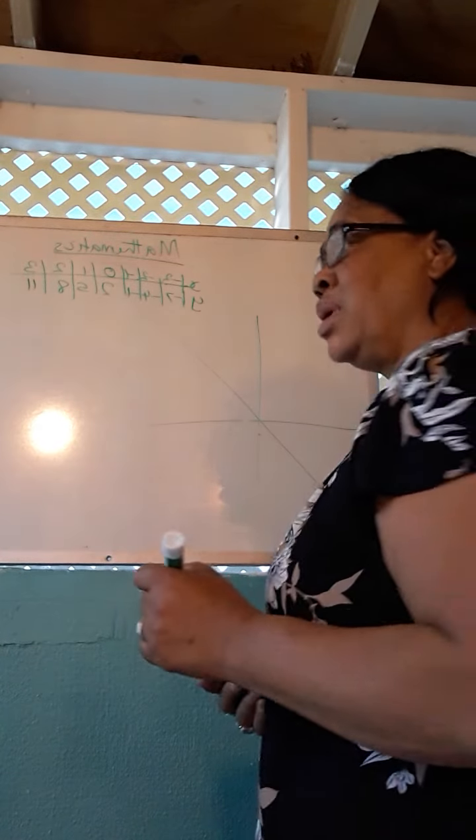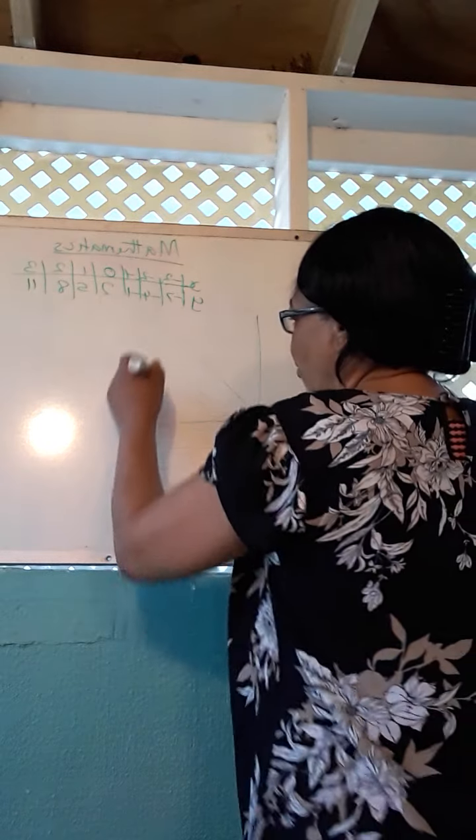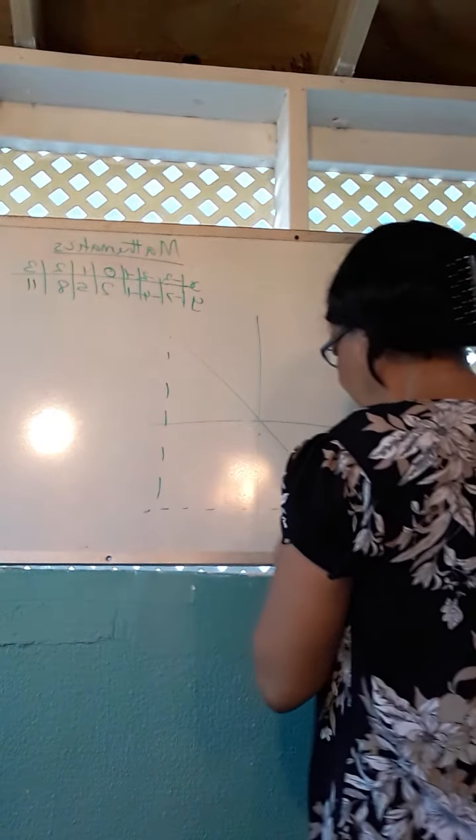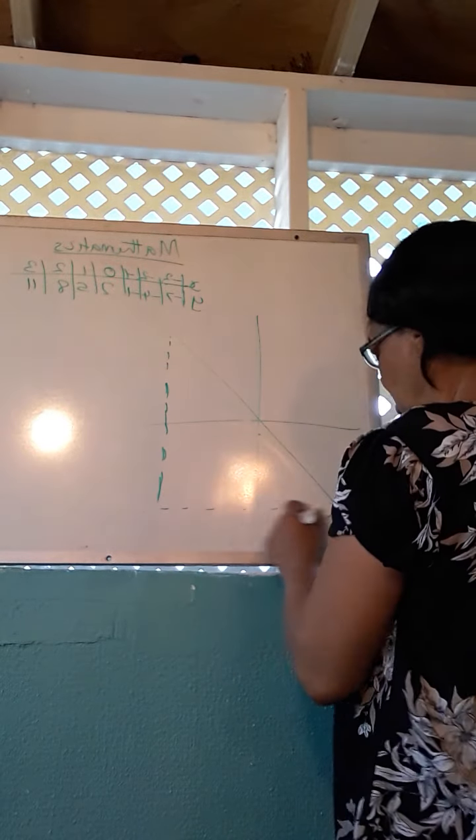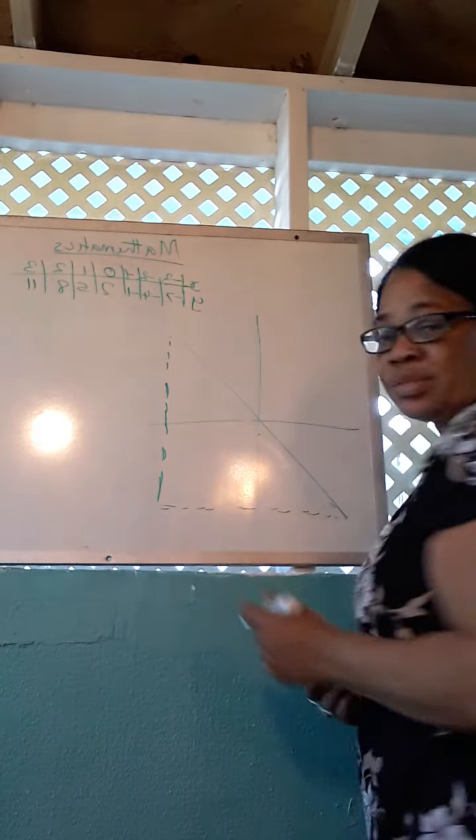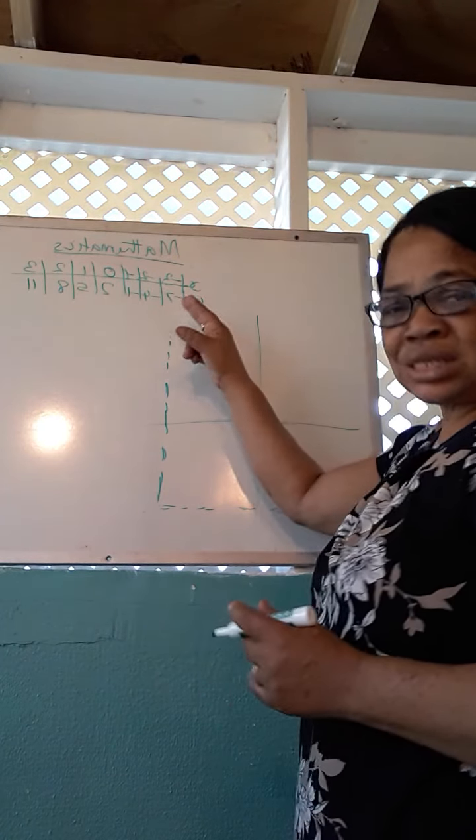Now what does gradient mean? Gradient is talking about the height of the slope that we have. Notice that we have a slope that is going that way. But if I should do this, what we would actually get is something that looks like a right angle triangle.